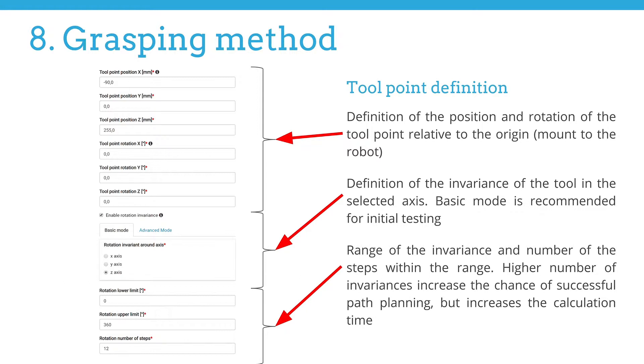The third section contains settings regarding the range of the invariance and the number of steps within the range. A higher number of invariances increase the chance of successful path planning, but also increases the calculation time. In our example, 12 steps prove to be the right balance between the reachability of the object respective to the reasonable time of the inverse kinematics calculation.